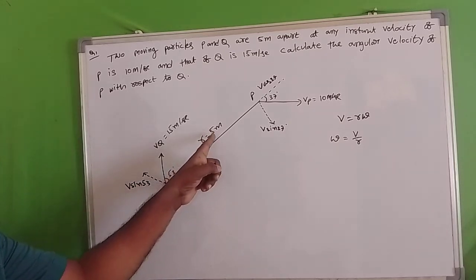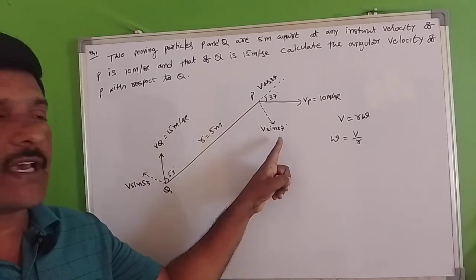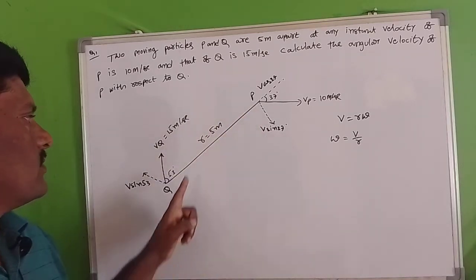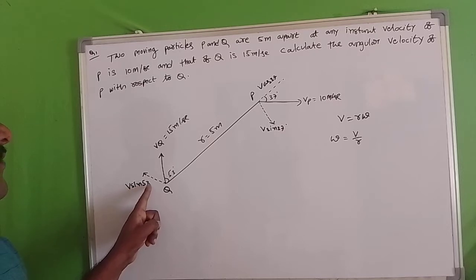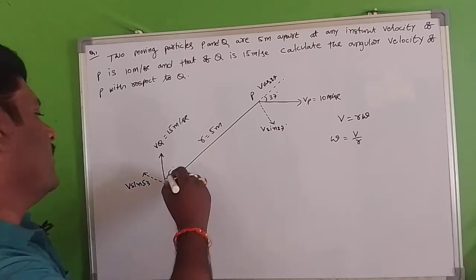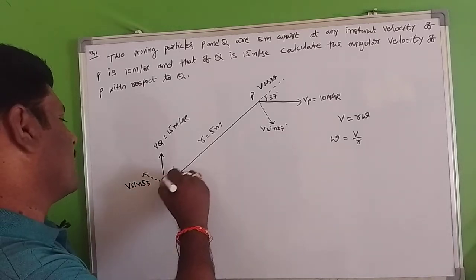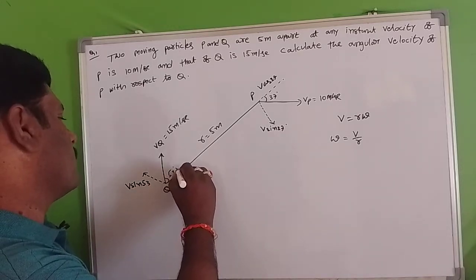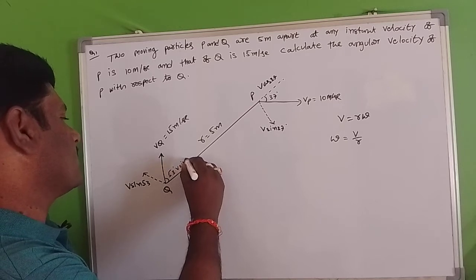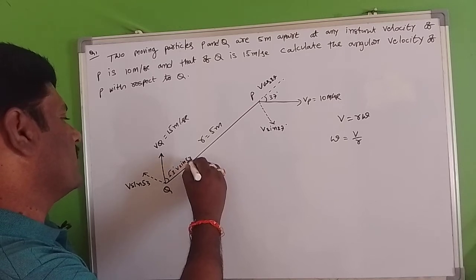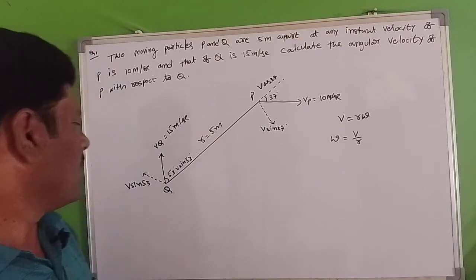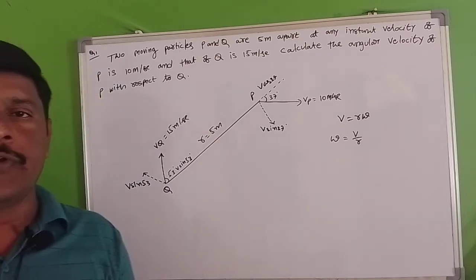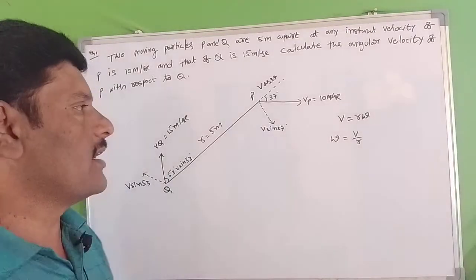The perpendicular component is V sin 37 degrees. And the perpendicular component for Q is V sin 53 degrees. We can indicate the direction of V sin 53 degrees. The angle at P is 37 degrees and we calculate using 53 degrees.